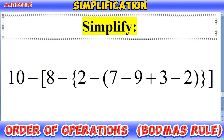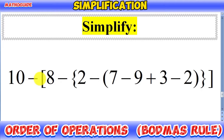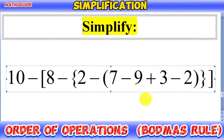Hi guys, welcome to my YouTube channel. Today we are going to solve another problem of simplification using order of operations. The expression is: 10 minus square bracket opens, 8 minus curly bracket opens, 2 minus parenthesis opens, 7 minus 9 plus 3 minus 2, parenthesis closed, curly bracket closed, square bracket closed.